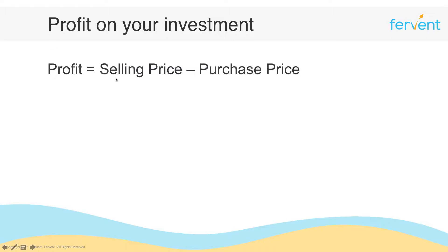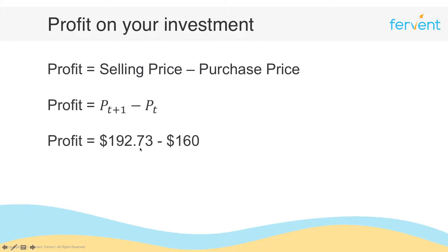We can annotate the selling price as pt+1 and the purchase price as pt. So pt+1 means the price at time t+1, and pt means the price of the stock at time t. t could be whatever you like — the date of purchase, the month of purchase, or the quarter of purchase, depending on the frequency you're working with. In our case, pt+1 was $192.73 and pt was $160, giving a profit of $32.73.